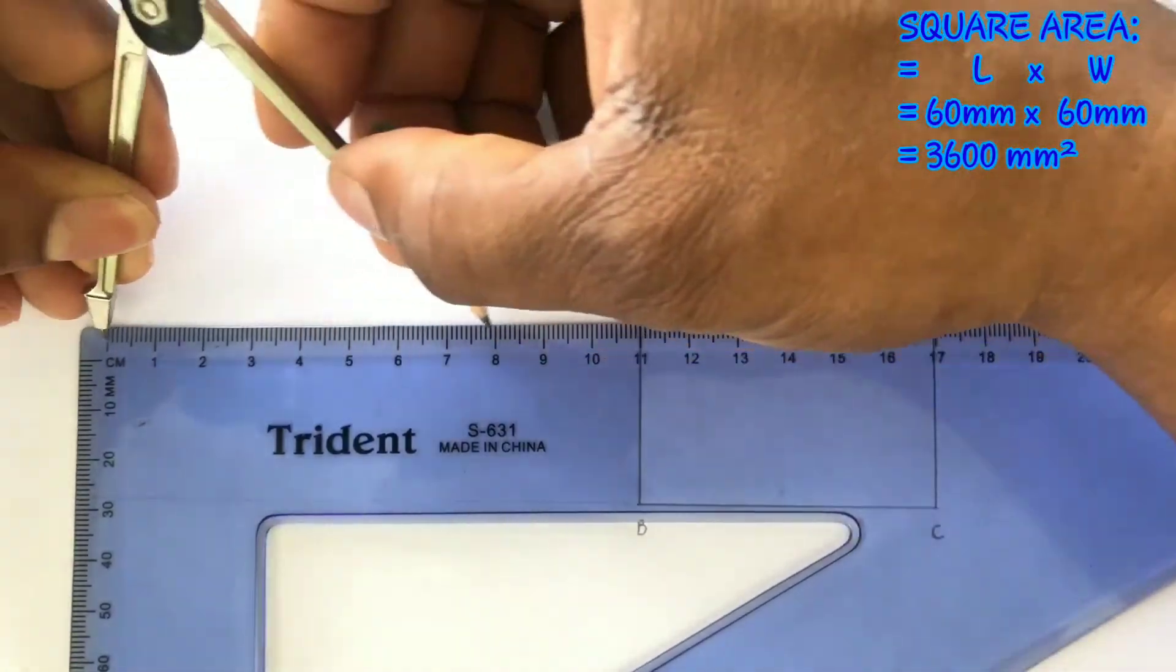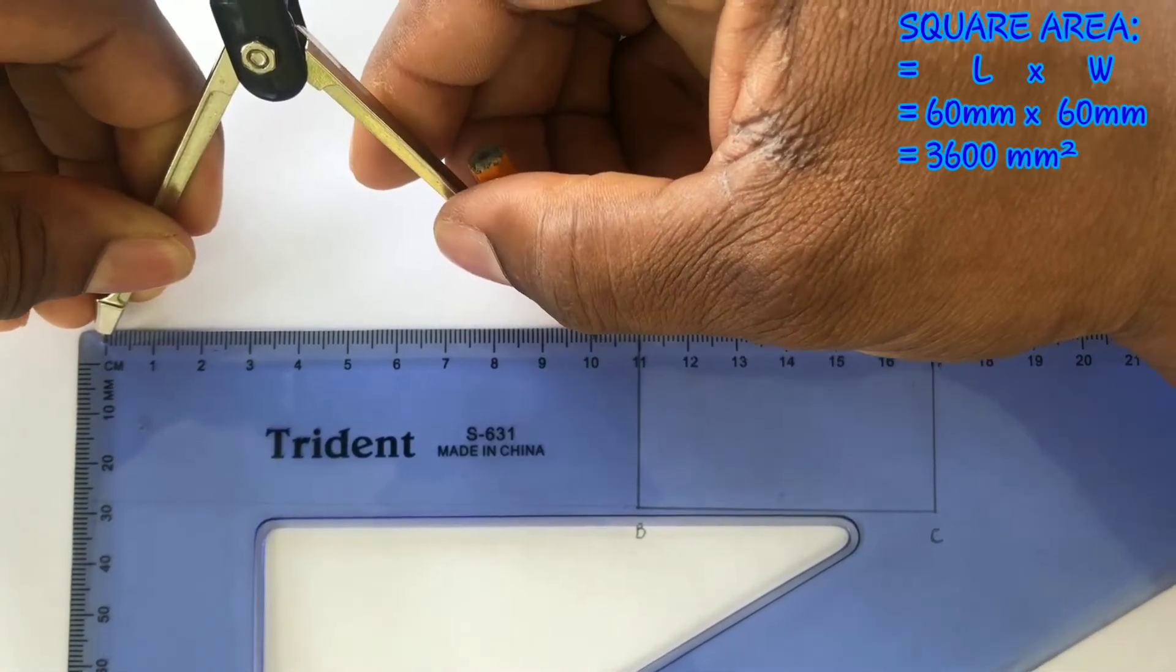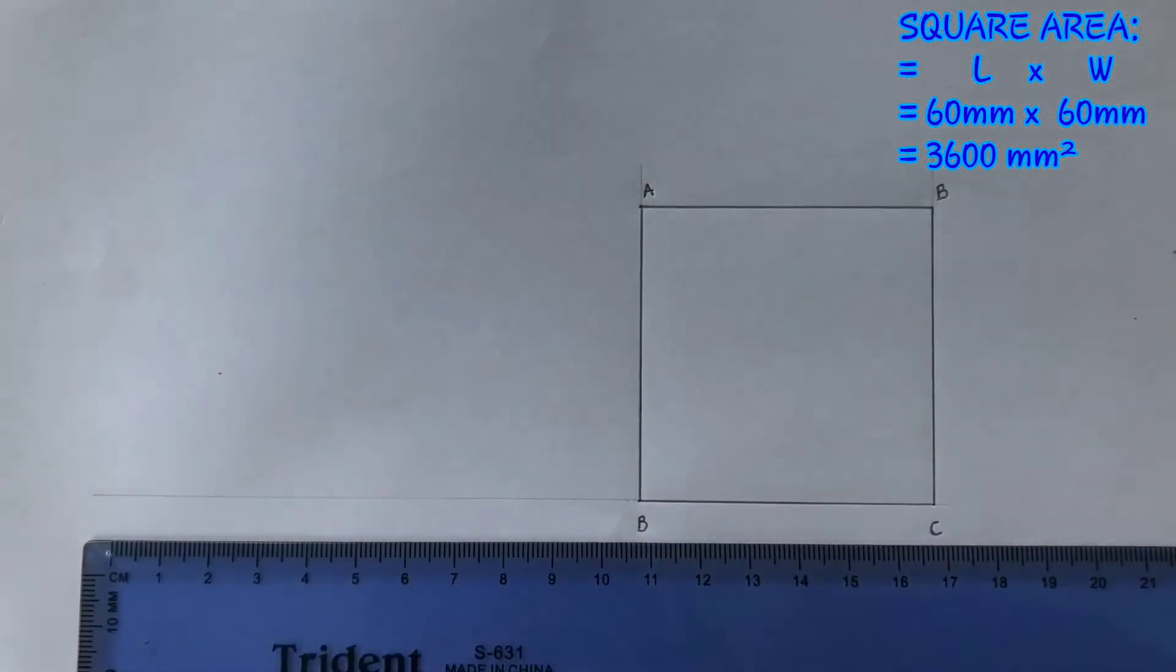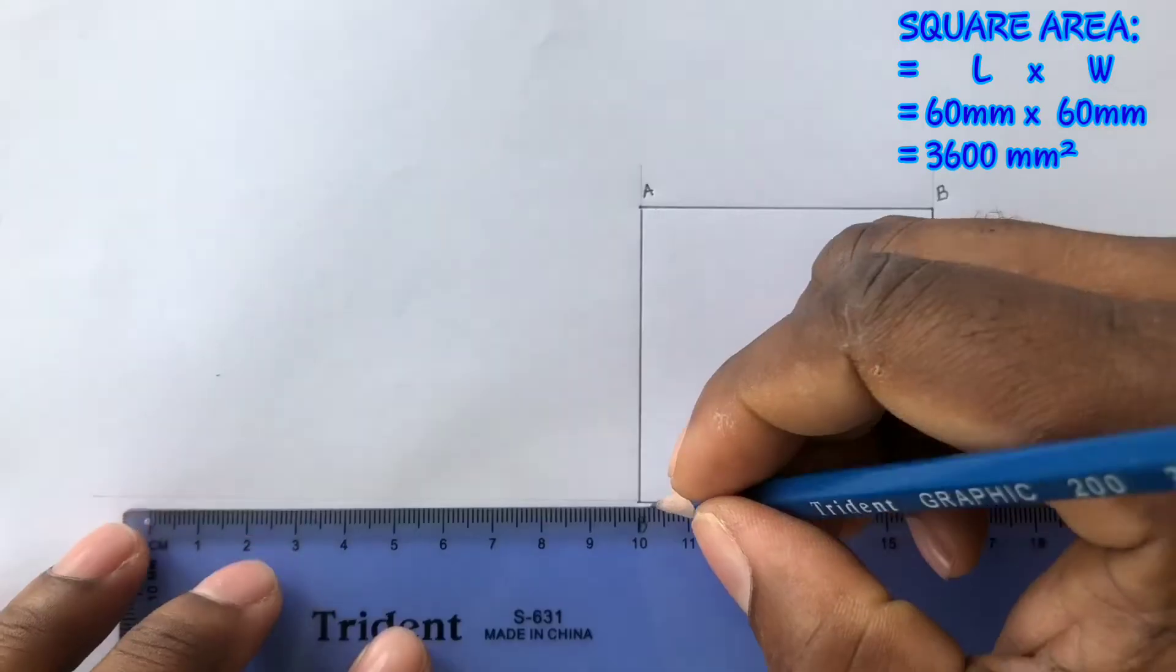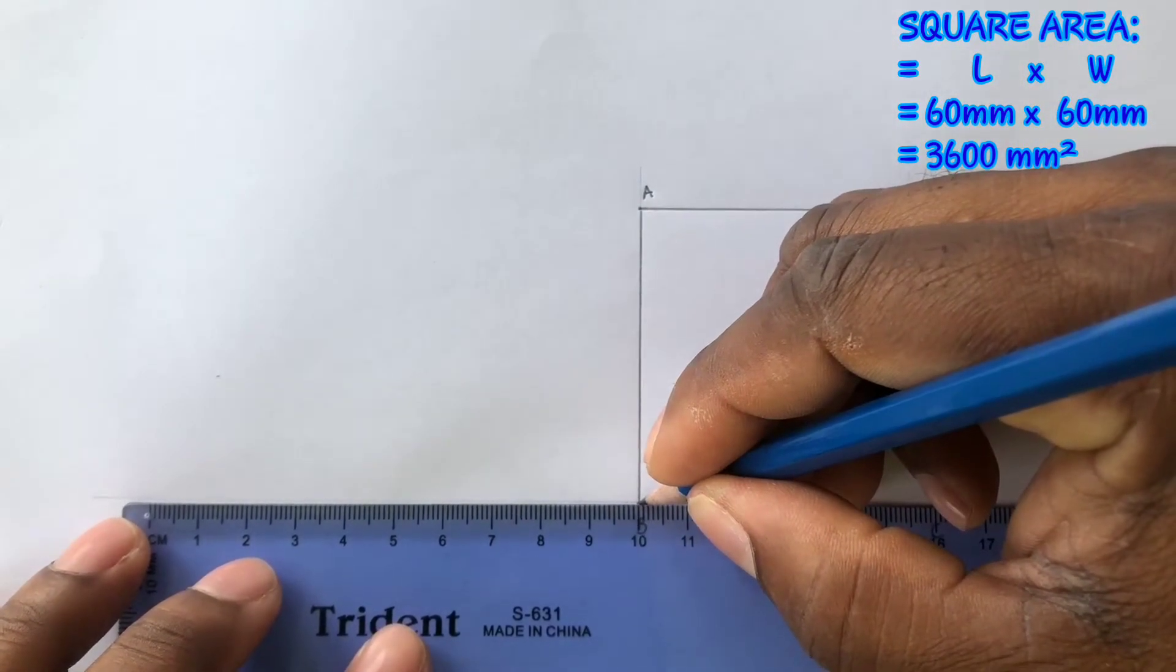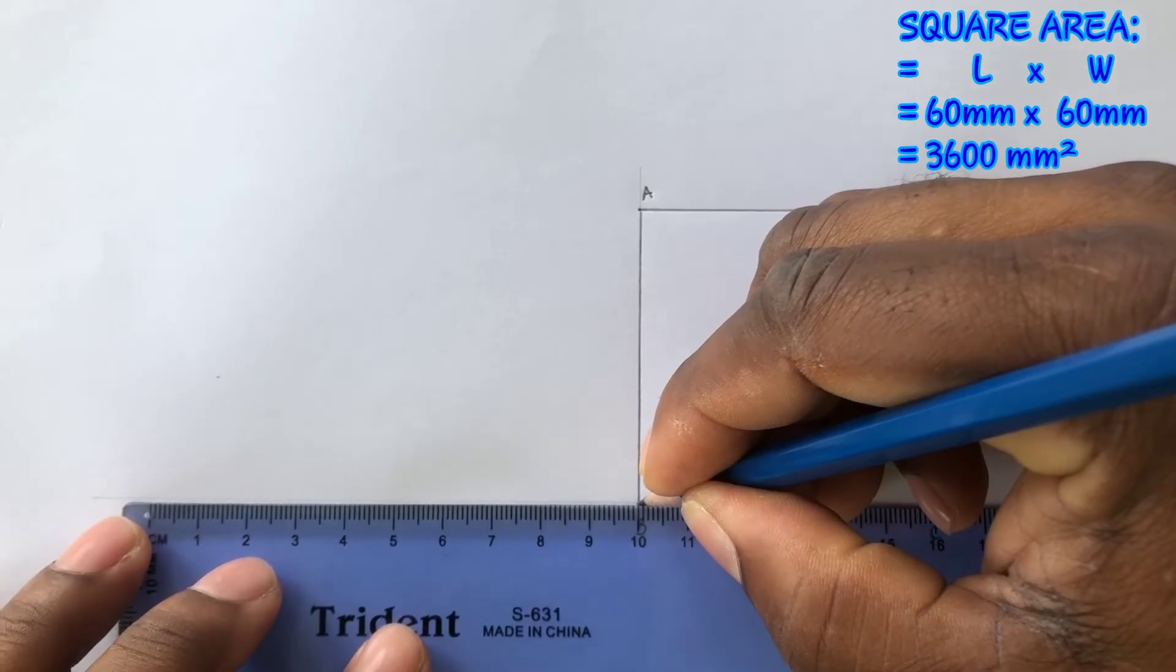Open your compass to 100 millimeters or you could mark off 100 millimeters using your set square from point B, whichever of the two you use is fine.